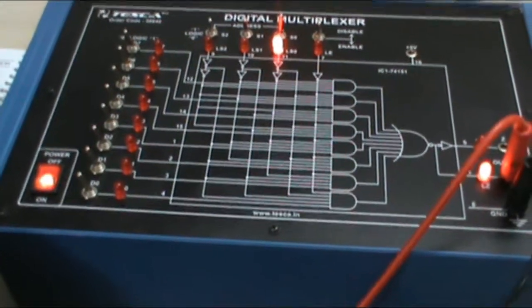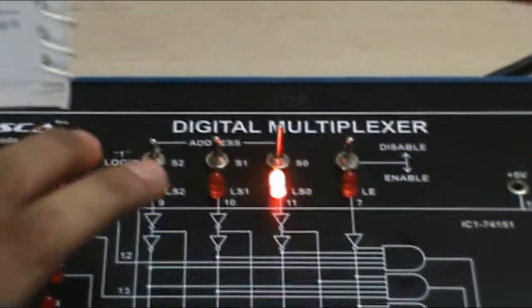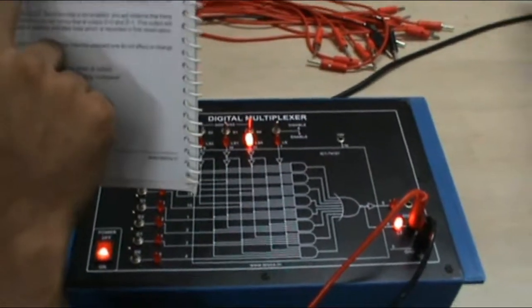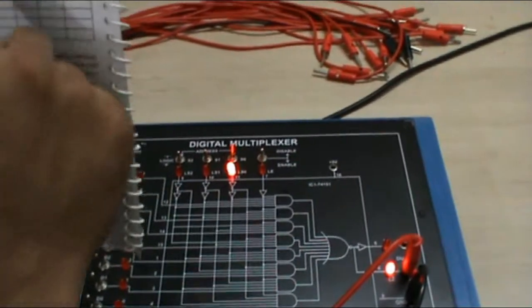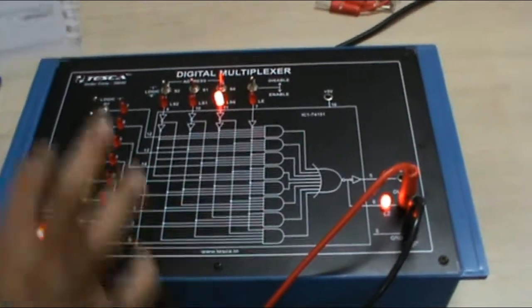Similarly we have to take the reading of all the values from 0 0 0 to 1 1 1 and take the values of D0 to D7 to 0 or 1 with every value of the address lines. Take both the values 0 and 1 of every logic switch from D0 to D7.